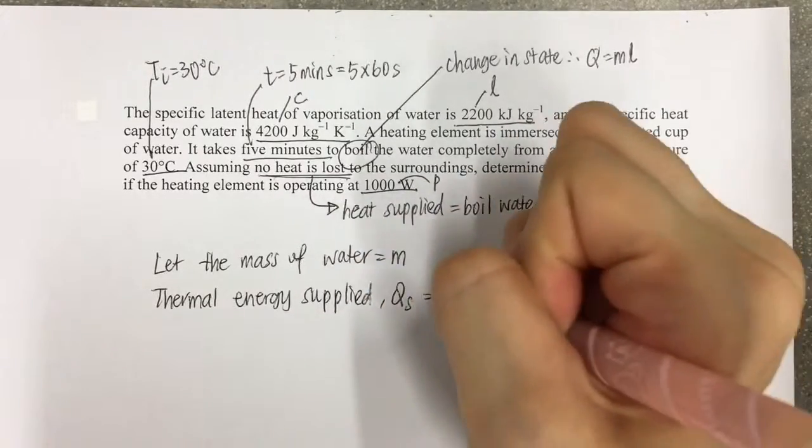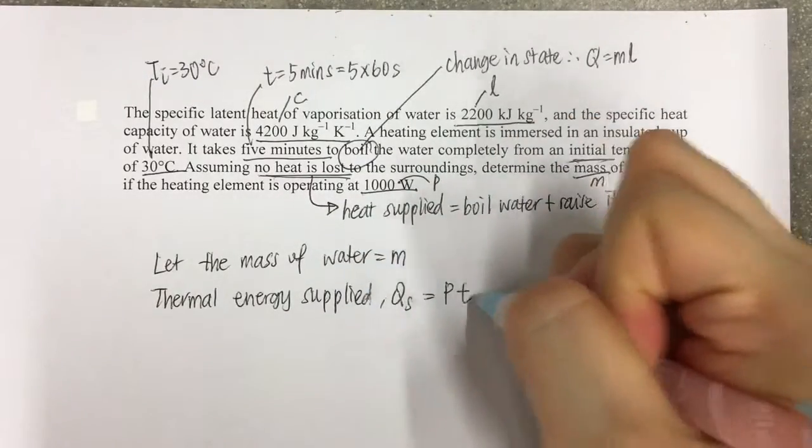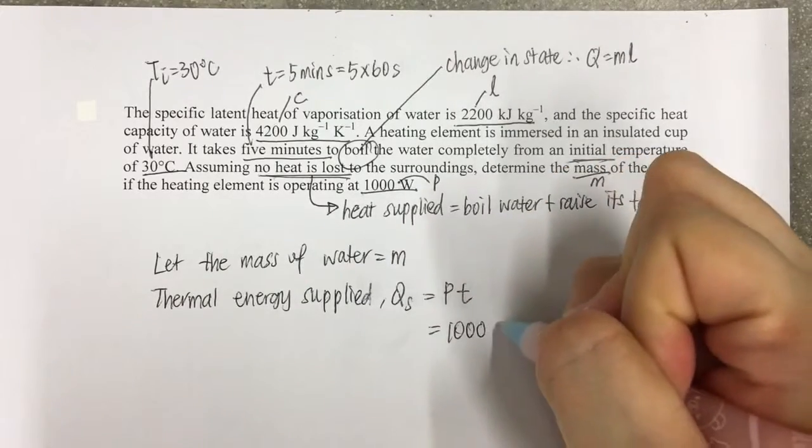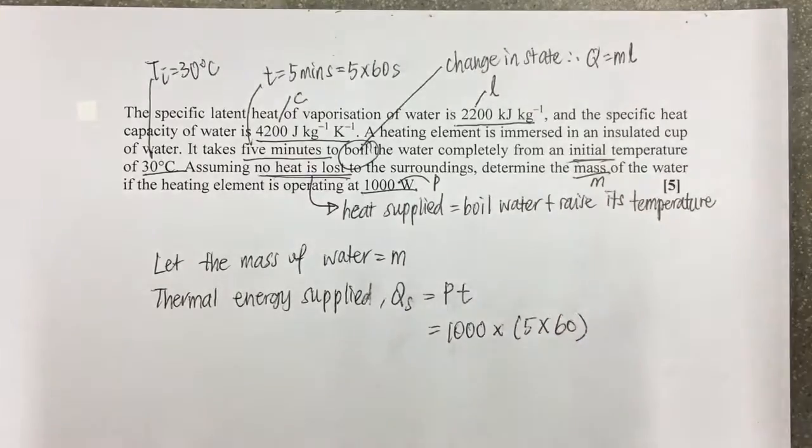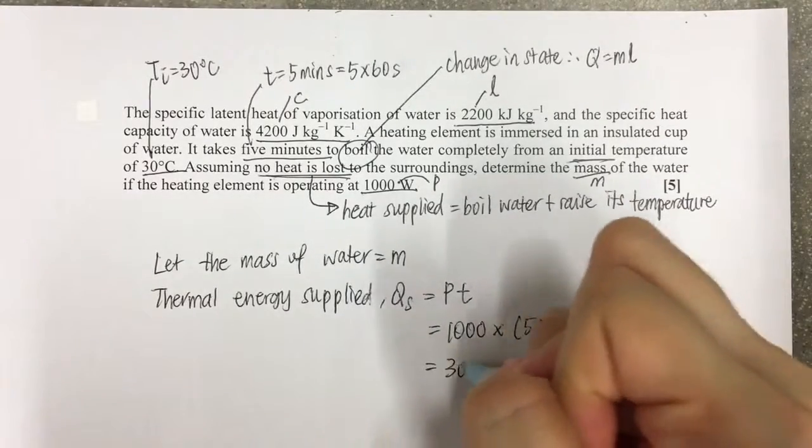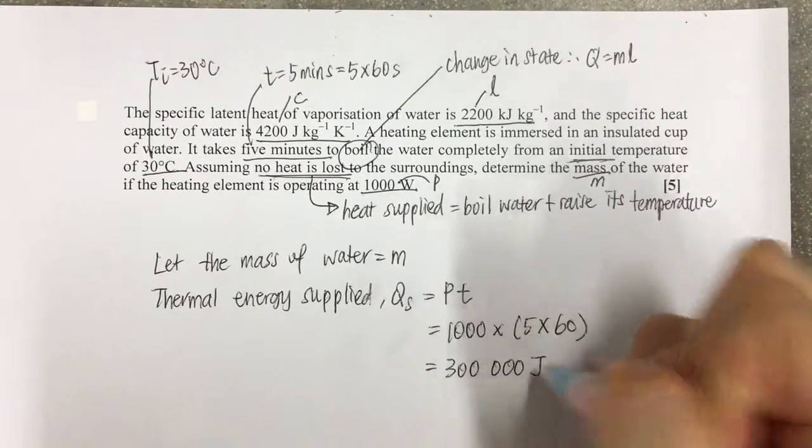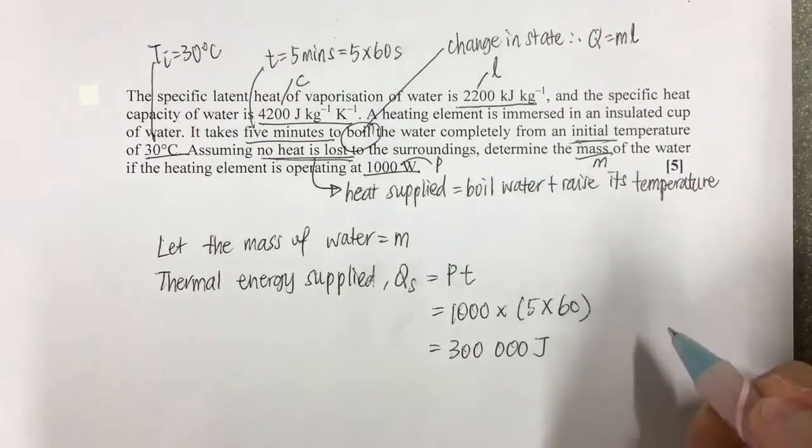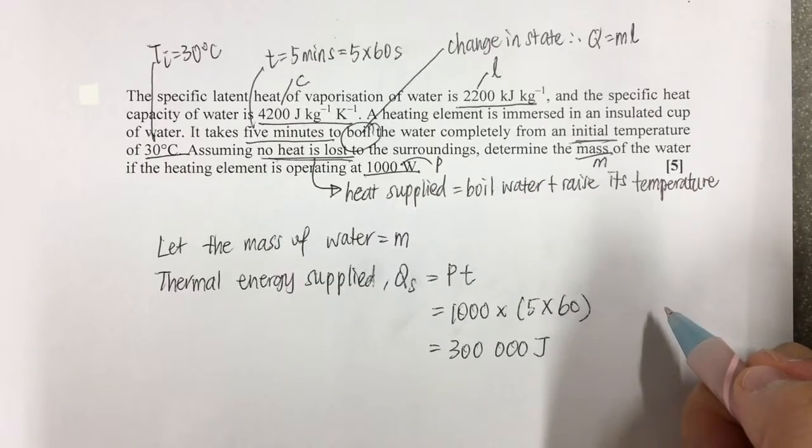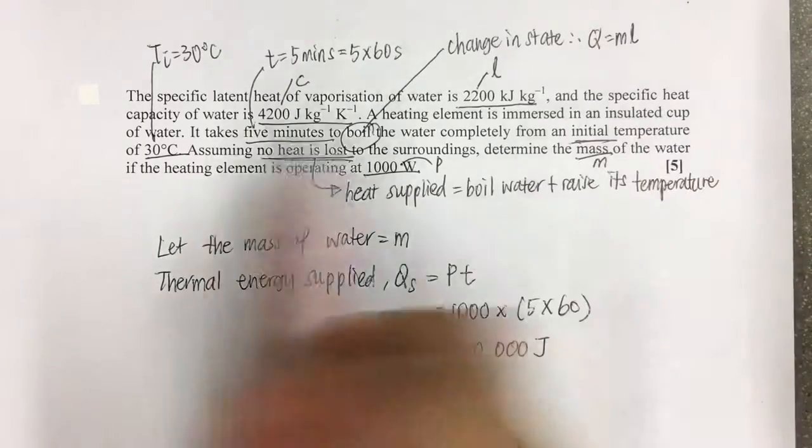Energy supplied Qs equals power times time, so power is 1000, time must be in seconds, 5 times 60, so we get 300,000 joules. This thermal energy that is supplied will be used to raise the temperature of water.